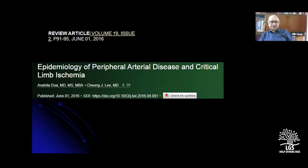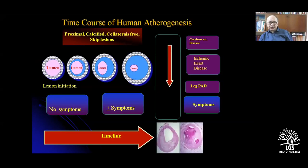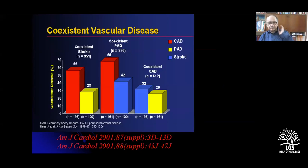The time course of human atherosclerosis genesis is initiated over at least 20 years; some say atherosclerosis starts at birth. You can have cerebrovascular diseases, ischemic heart disease, and leg pain — symptomatic or without symptoms — and you should be very careful. There is a coexistence of vascular diseases, particularly CAD and cerebrovascular disease, with a genetic preponderance. Atherosclerosis may affect peripheral artery disease or coronary artery disease.